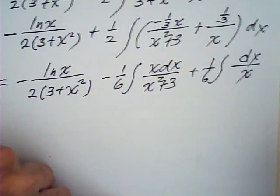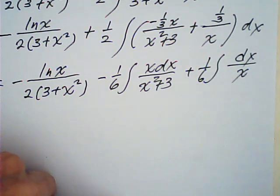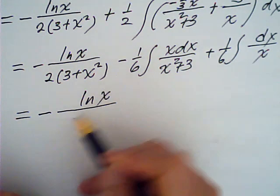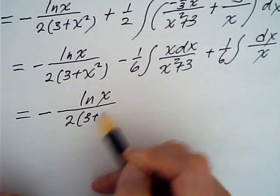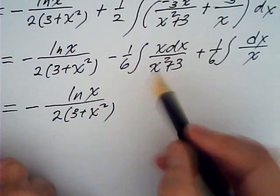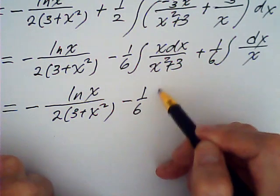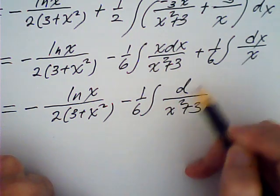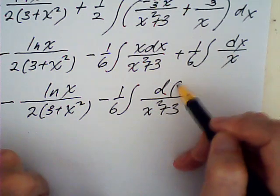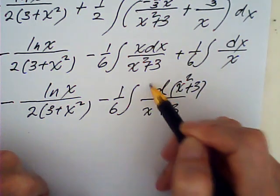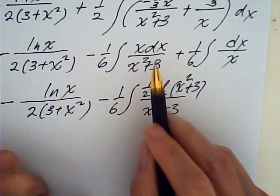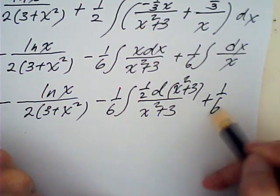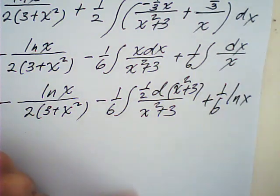This is natural log x over 3 plus x squared, which is x squared plus 3 d of x squared plus 3 times half to get back x dx, and this is log x.